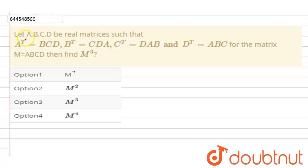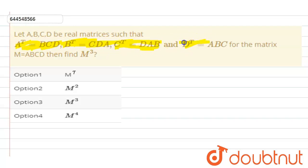The question is: let A, B, C, D be real matrices such that A transpose equals BCD, B transpose equals CDA, C transpose equals DAB, and D transpose equals ABC. For the matrix M equal to ABCD, find M cube.